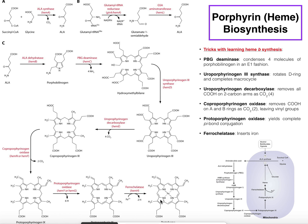Let's talk about how we actually get heme or protoheme. The starting material for heme is delta-aminolevulinic acid, sometimes abbreviated as ALA, and that's how I'll be referring to it for the rest of the video. For one molecule of heme, we're actually going to need eight molecules of ALA, as shown right here.